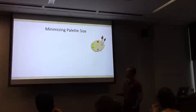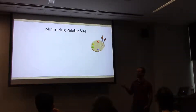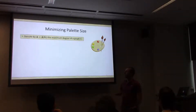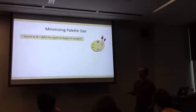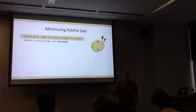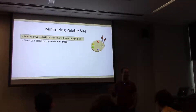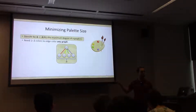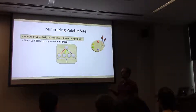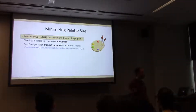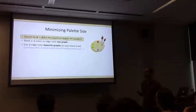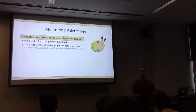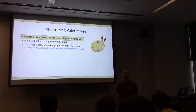What's known about the optimal number of colors? There's one crucial graph parameter: delta, the max degree of a graph. It's clearly a lower bound on the number of colors — just to satisfy that one vertex, you can't repeat any color twice. On the other hand, for bipartite graphs, this is actually the right bound: you can delta edge color any bipartite graph very efficiently.